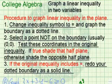First we're going to change the inequality symbol to equal and graph the boundary as a dotted line. It's important that it's a dotted line. Then we select a point not on the boundary. Usually we use the coordinates 0,0. We test these coordinates in the original inequality.